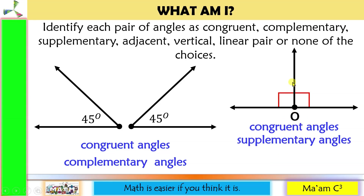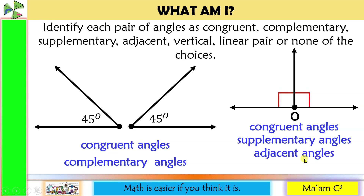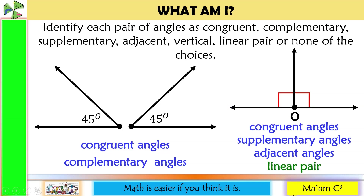Notice that they share a common ray and a common vertex, so we can also say that they are adjacent angles. And their non-common sides form a straight line or opposite rays, so we can also say that they form a linear pair. In fact, if you have supplementary adjacent angles, then you have a linear pair.